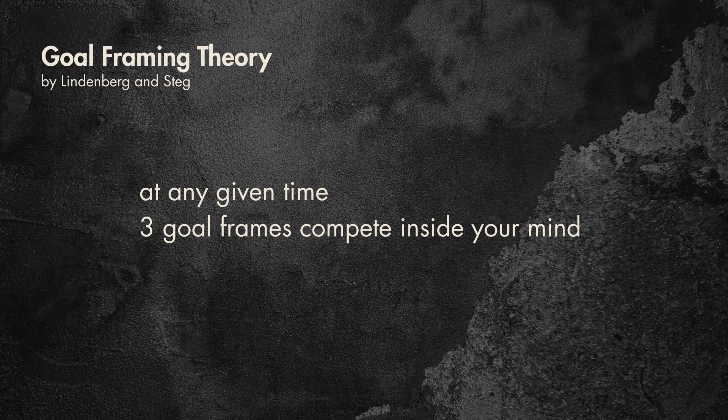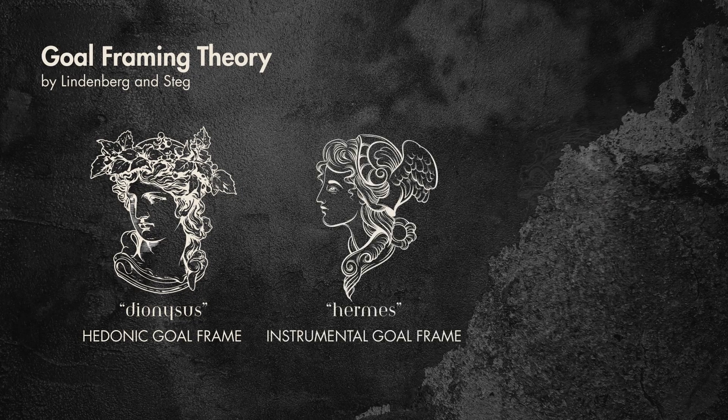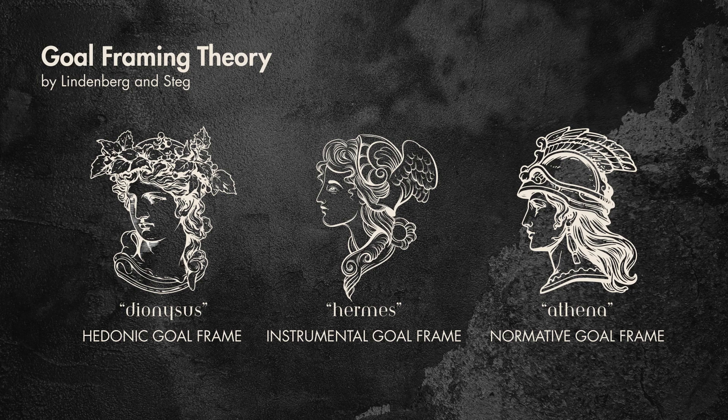It calibrates your perspective to that particular situation you are facing. And if you remember from our systems thinking series, perspective actually defines what is a problem and what is not. According to Lindenberg and Stacks, at any given time three goal frames compete inside your brain. I like to think of them like Greek gods — how Dionysus would see, decide and act; how Hermes would see, decide and act; and how Athena would see, decide and act.